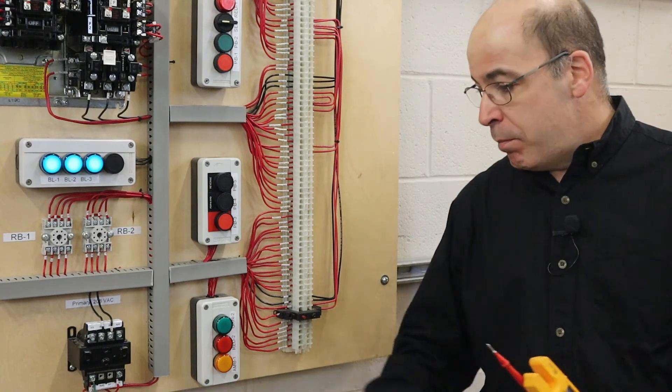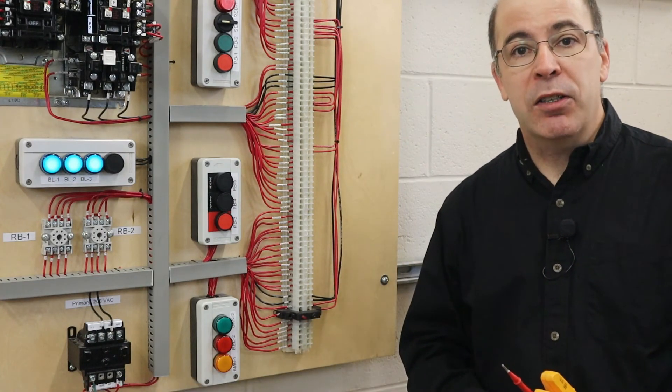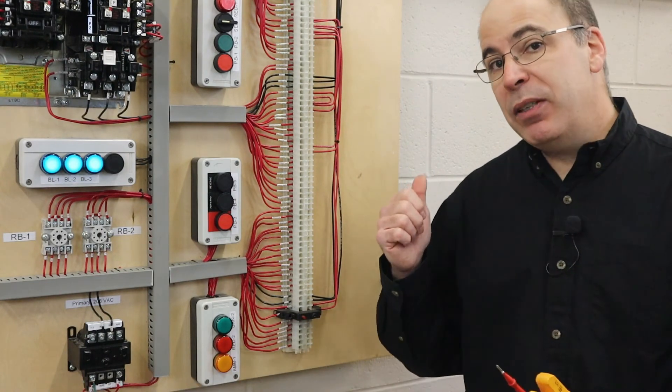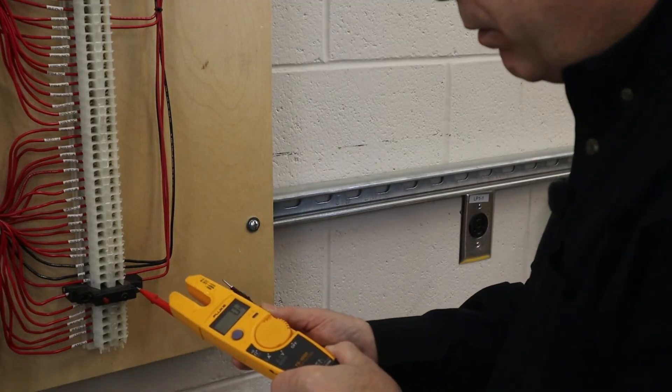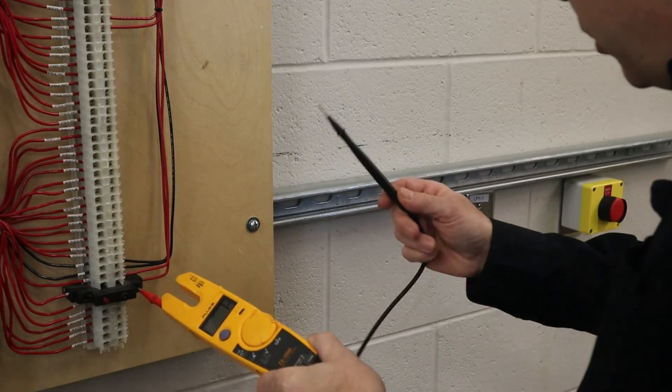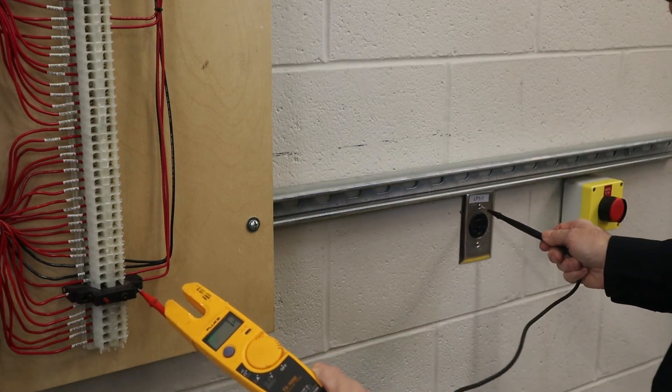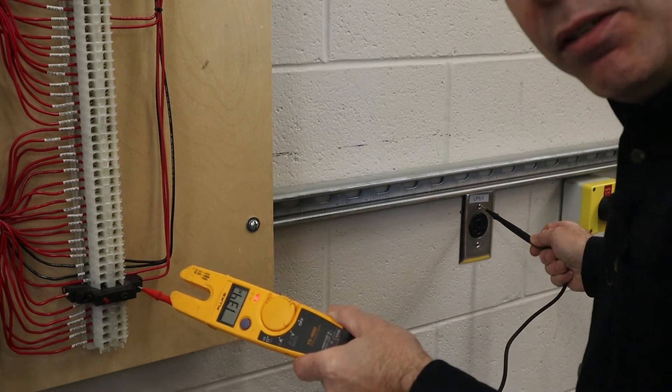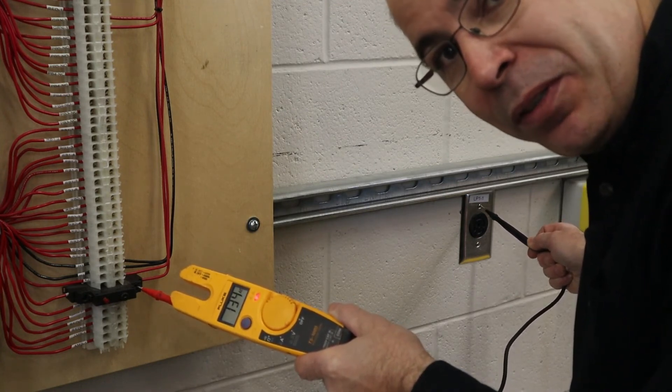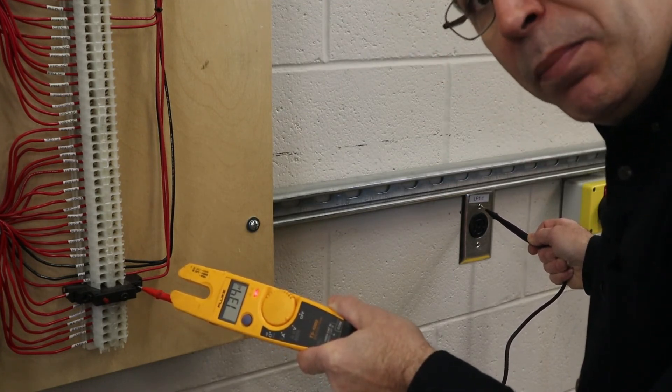But I can tell you what is bonded, and that is the faceplate of this receptacle. Because now that we've bonded the secondary of our transformer, I should be able to get a reading off of this. So we're going to take a reading from the output of my circuit breaker to the metal of this faceplate. And look, we're seeing 134 volts, which is exactly what we would hope to see.